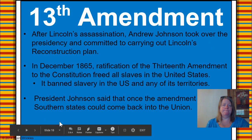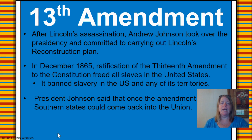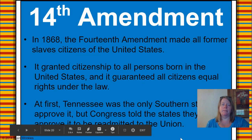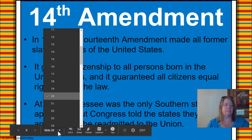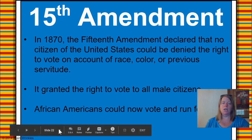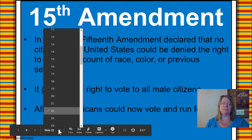Let's go to slide 18 and briefly go over the amendments one more time. The 13th Amendment was the amendment to abolish slavery. After Lincoln's assassination, Andrew Johnson became the 17th president, and during his presidency the 13th Amendment was ratified — it freed all slaves and banned slavery in the U.S. and any other territories. The 14th Amendment made all former slaves citizens of the United States. The 15th Amendment declared that no citizen could be denied the right to vote on account of their race, color, or previous servitude. The 13th, 14th, and 15th Amendments were added to the Constitution to show the importance of abolishing slavery and to give rights back to the people they belong to.